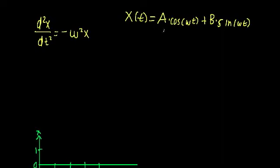Essentially, our general solution is a sum of two sinusoids that have the same frequency. In this general solution there are two undetermined coefficients, A and B, and we can find out their values by plugging in two initial conditions.